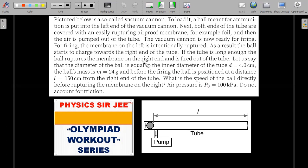So here we go with the formal wording. Pictured below is a so-called vacuum cannon. To load it, a ball meant for ammunition is put into the left end of the vacuum cannon. Next, both ends of the tube are covered with an easily rupturing airproof membrane, for example, a foil, and then the air is pumped out of the tube. The vacuum cannon is now ready for firing.